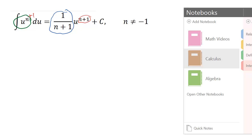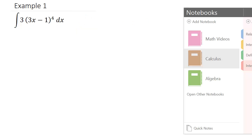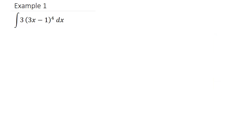Let's take a look at our first example. We have the integral of 3 times (3x minus 1) raised to the fourth power. Typically when we're using the power rule, the part that is in parentheses — here that's (3x minus 1) — raised to a power, we're going to let u equal that part in parentheses.